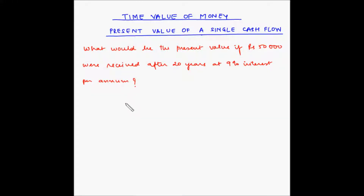Let us look at another example of time value of money where we will find the present value of a single cash flow. The example is: what would be the present value if rupees 50,000 were received after 20 years at 9% interest per annum? Let's try to understand this using a time scale.